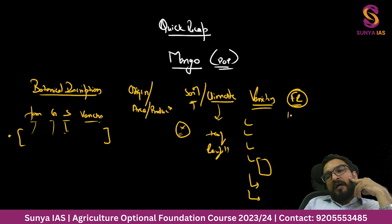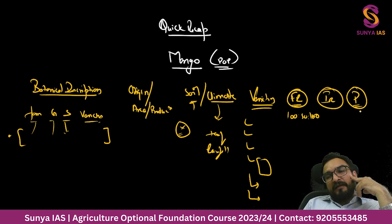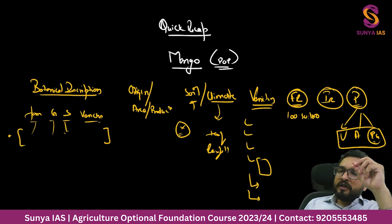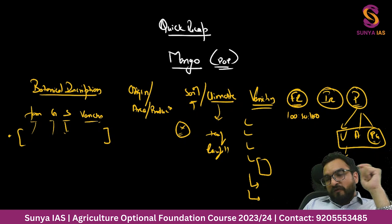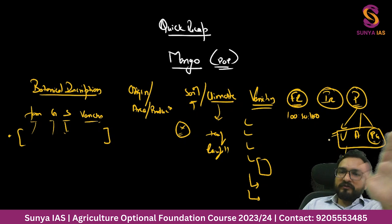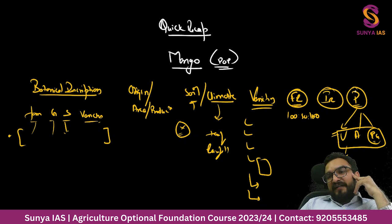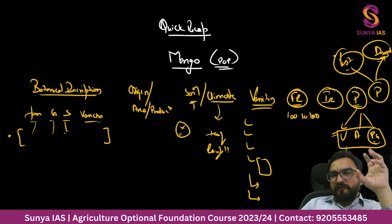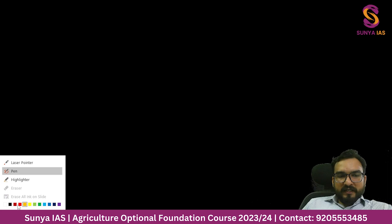You should have understood the fertilizer requirement - 150:100 in the first year, then multiplied by 10 in the 10th year. You should know the irrigation requirement and propagation methods in the form of veneer grafting, air layering, and epicotyle grafting. After that, you should know about pest protection and physical disorders of mango. We will keep a similar framework for banana.